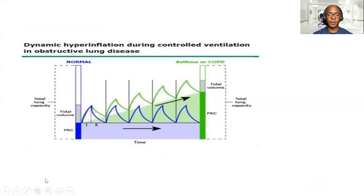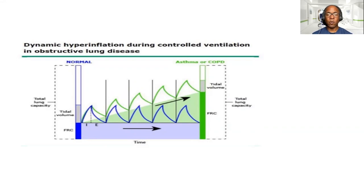Here's another example of what happens in dynamic hyperinflation from inadequate emptying of the lungs. Over time, you see the dynamic FRC increases, whereas tidal volume and IRV are compartments that actually decrease over time.